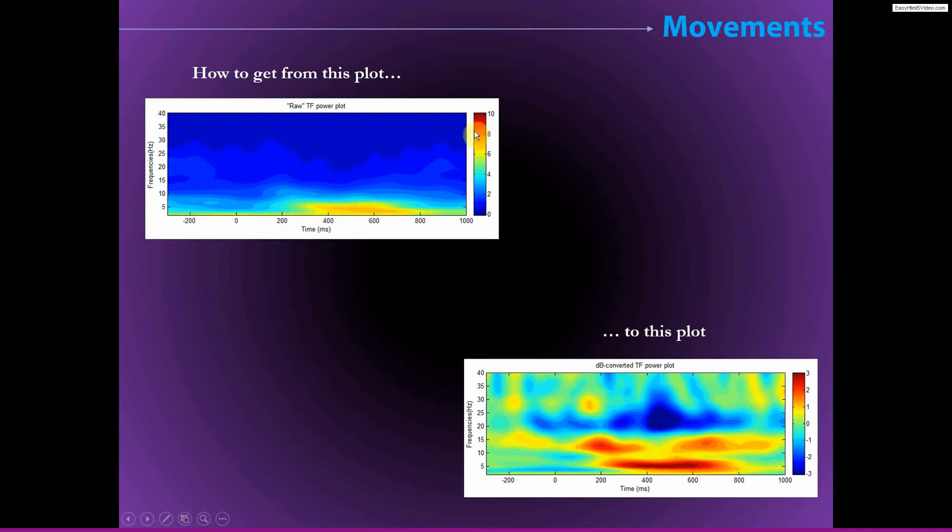And you can see, this is showing raw power and this is decibel transformed power. There's a few features in these plots that are roughly comparable between the two plots with and without normalization. But there are a lot of other dynamics that are technically present in this plot but just very difficult to see without doing the normalization.